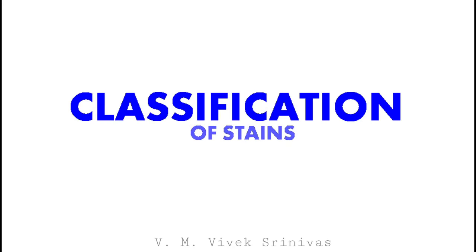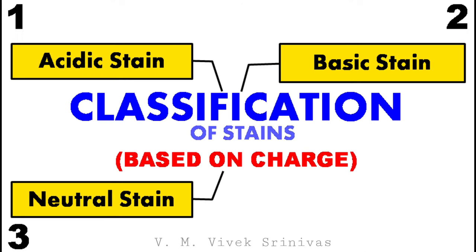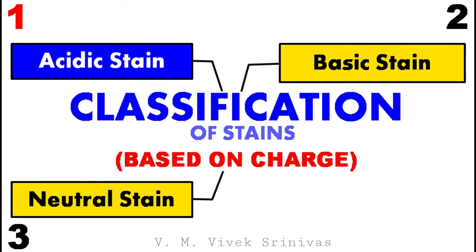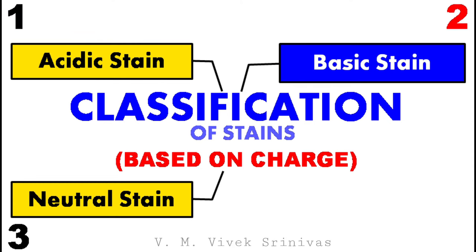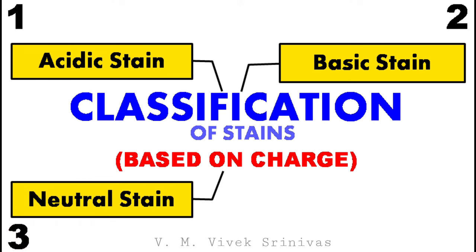Next, how these stains are classified, especially based on their charges. It is classified into three types: the acidic stain, the basic stain, and the neutral stain. These are the three types of stain classified based on their charges.